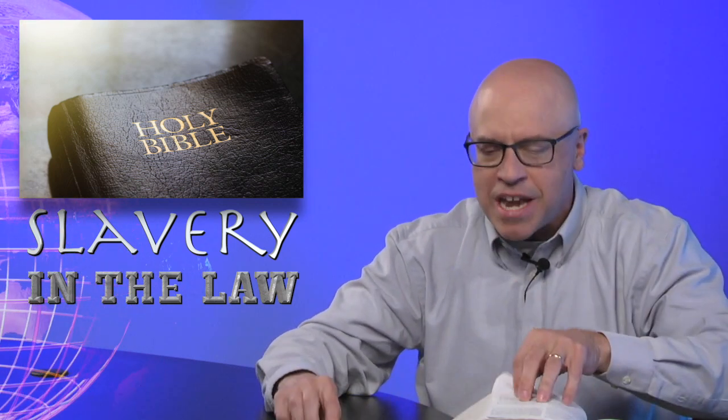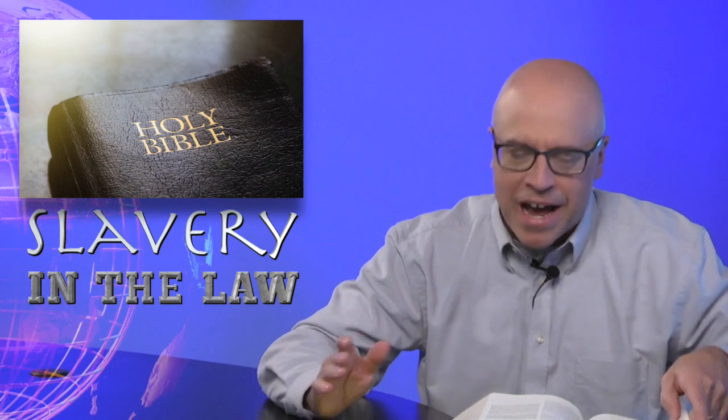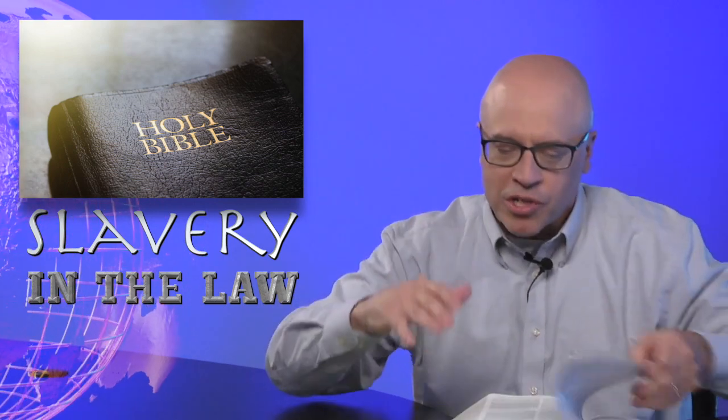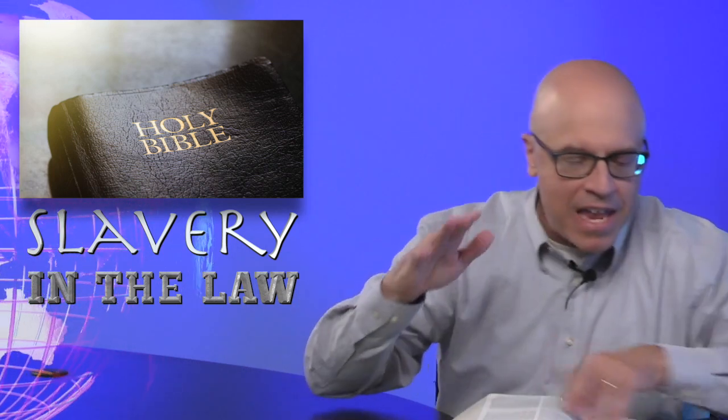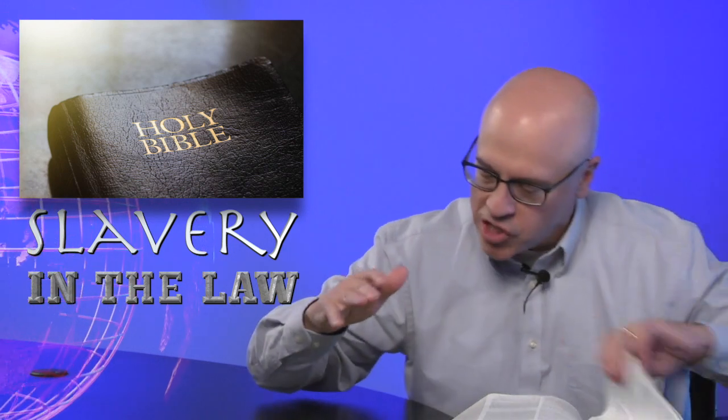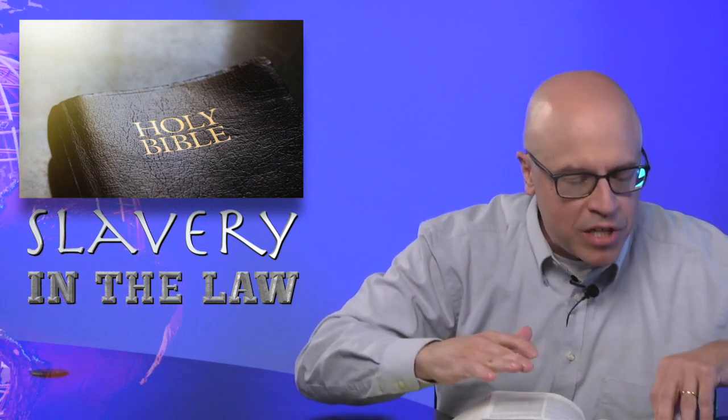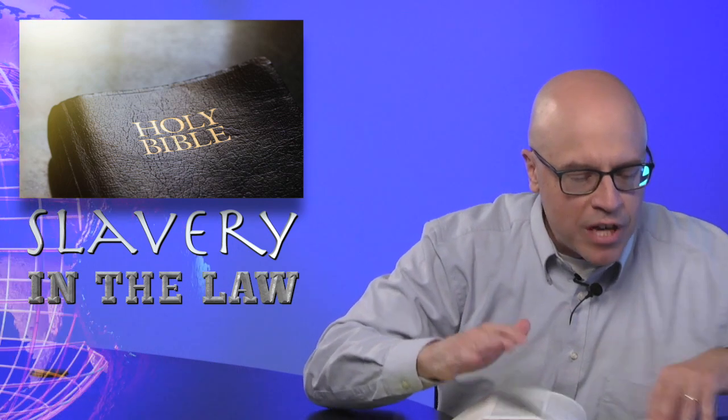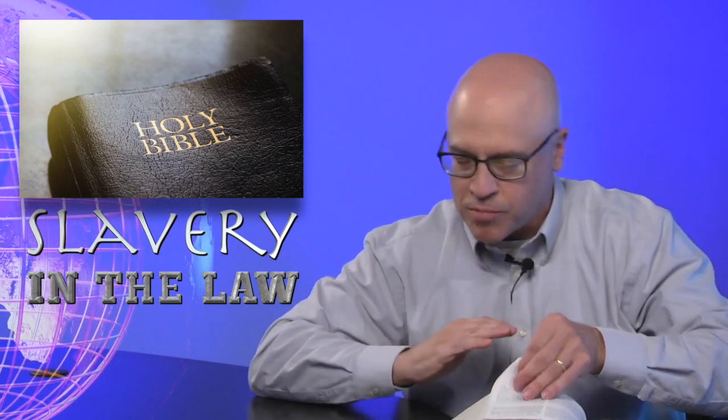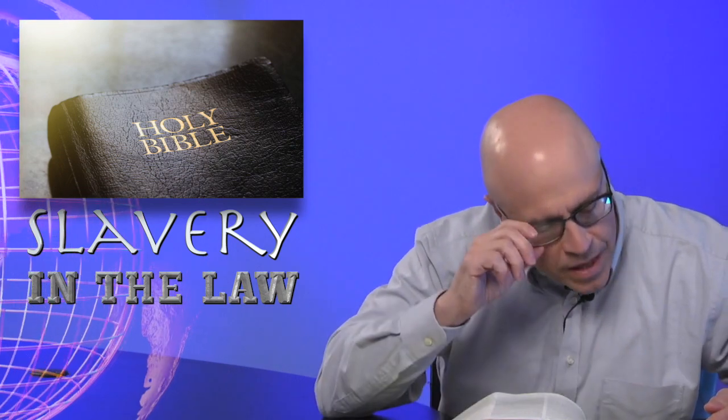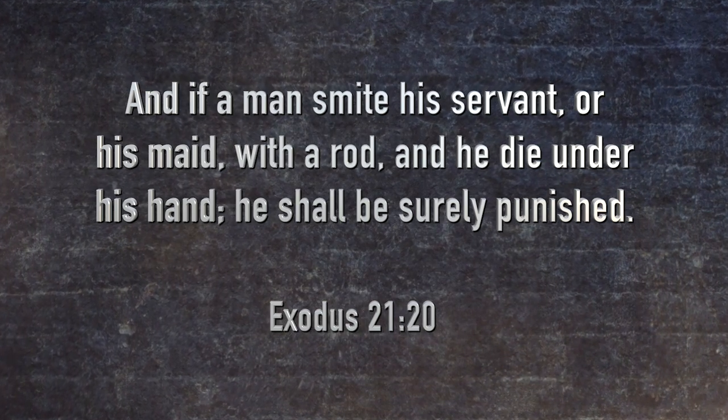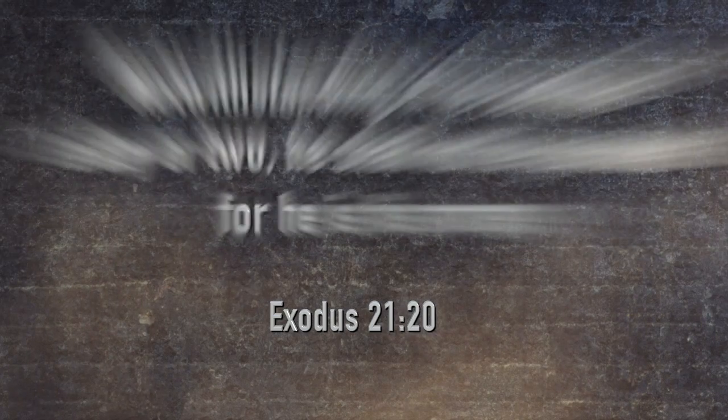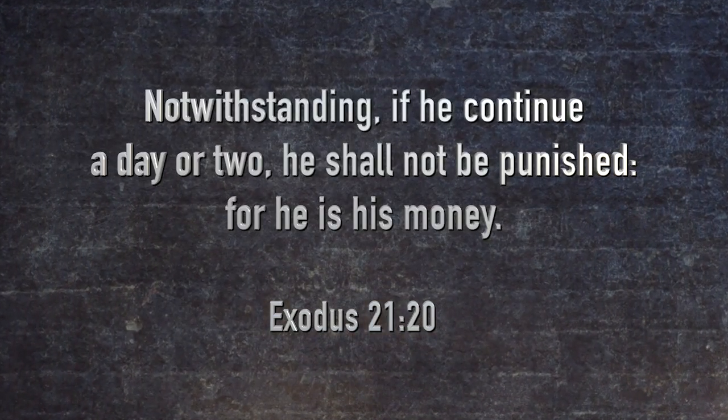So again, let's look at now some of the punishments that could be meted out. Because some of the critics say, well, it looks like God's law is allowing Israel to punish slaves severely. And they come up with that based on Exodus chapter 21. So let me turn over there to give you some further information on this. Exodus chapter 21, verse 20. Listen to what it says: And if a man smite his servant or his maid with a rod and he die under his hand, he shall be surely punished, notwithstanding if he continues a day or two, he shall not be punished for he is his money. Now, this is definitely talking about slaves.